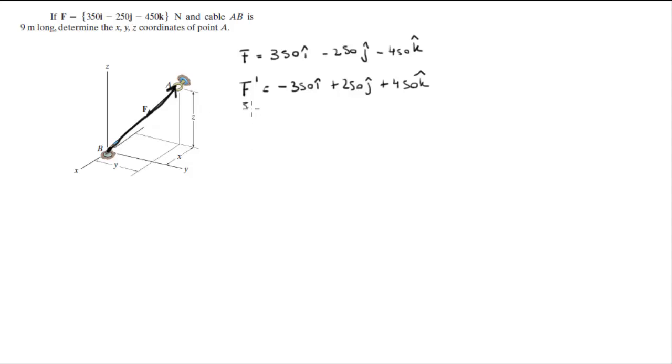Now what we're going to do is find the direction angles of this vector by finding the magnitude. The magnitude can be found by doing the x component squared plus the y component squared plus the z component squared. Once you got that value, you're going to know that it's 622.5 when you plug it in your calculator.